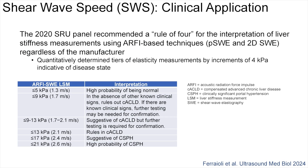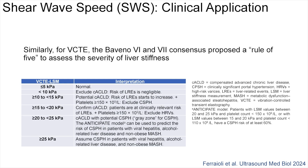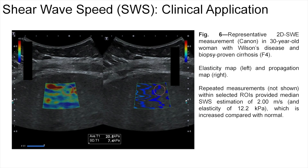For interpretation, the 2020 Society of Radiologists in Ultrasound panel recommended a Rule of 4 for the interpretation of liver stiffness measurements using ARFI-based techniques, regardless of manufacturer. These represent quantitatively determined tiers of elasticity measurements by increments of 4 kPa, indicative of disease state. Similarly, for VCTE, the Baveno 6 and 7 consensus proposed a Rule of 5 to assess the severity of liver stiffness. Here is a representative 2D shear wave elastography measurement in a 30-year-old woman with Wilson's disease and biopsy-proven stage 4 fibrosis, or cirrhosis. The elasticity map is shown on the left and propagation map on the right. Repeated measurements provided a median shear wave speed estimation of 2 m/s and elasticity of 12.2 kPa, which is increased compared with normal.